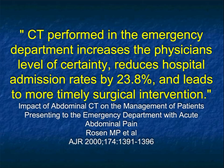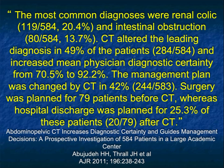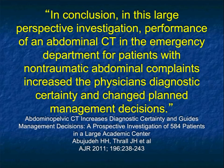An article from Mass General looked to determine whether there was good utilization of CT in the ER in the acute abdomen in the non-trauma setting. The most common reasons for CT were renal colic and intestinal obstruction. In 49% of patients, CT altered the lead diagnosis. Certainty was increased from 70 to 92%. Management plans changed in 42%. Surgery was planned for 79 patients before CT, and a quarter of these patients were discharged after CT. Look how great CT performed — that was the authors' conclusion. So why are we still asking the question?